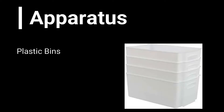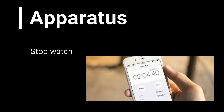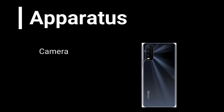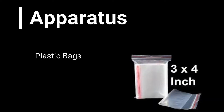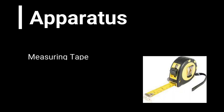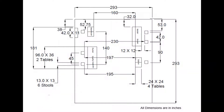After the blocks, the remaining apparatus includes plastic bins, a stopwatch, camera, plastic bags, measuring tape, and a bucket. This is the layout, which specifies which person will perform their task at which place.